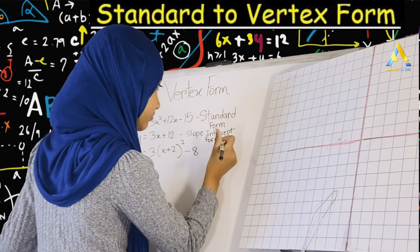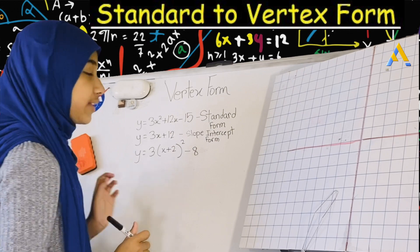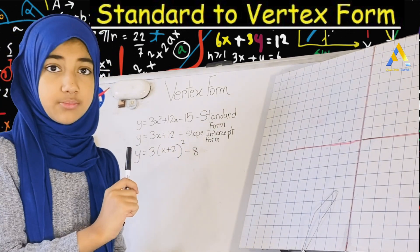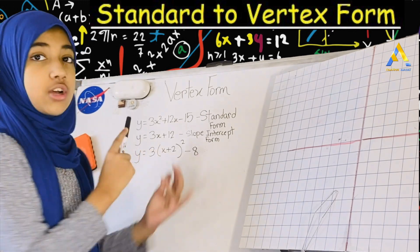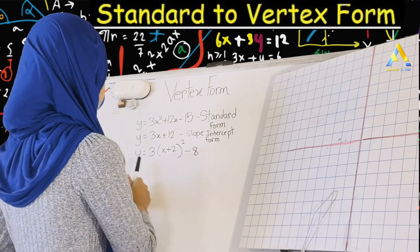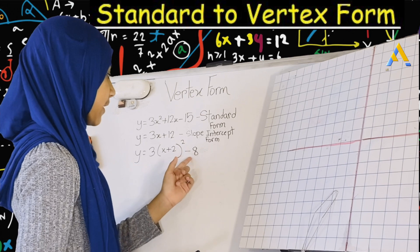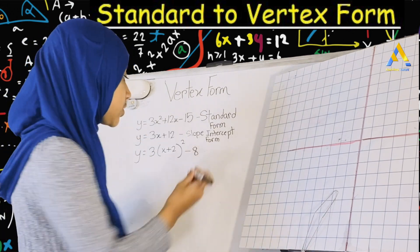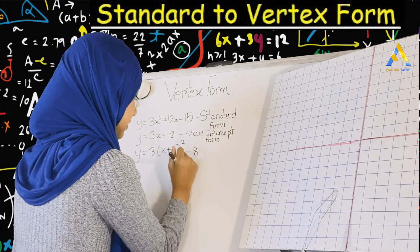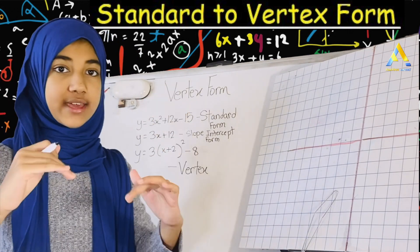The formula for slope-intercept form is y equals mx plus b. Here m is our slope and b is our 12. And this third equation, y equals 3 times (x plus 2) squared minus 8 — this is a new equation. This is our vertex form, which is what we will be focusing on in this video.